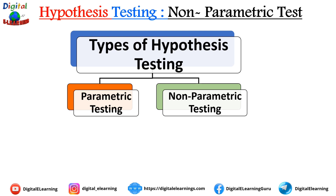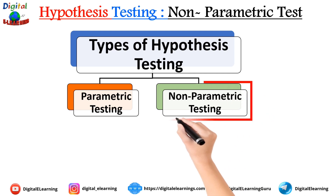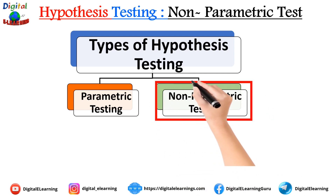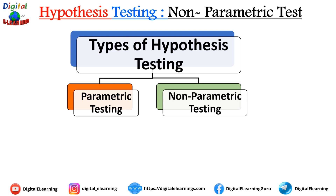For example, the student t-test, z-test, and ANOVA are all examples of parametric tests. Non-parametric tests are also known as distribution-free tests. Since they do not follow any underlying distribution, they are more flexible and can be used with data that does not meet these assumptions. So if a sample does not follow a normal distribution, a non-parametric test can be used.